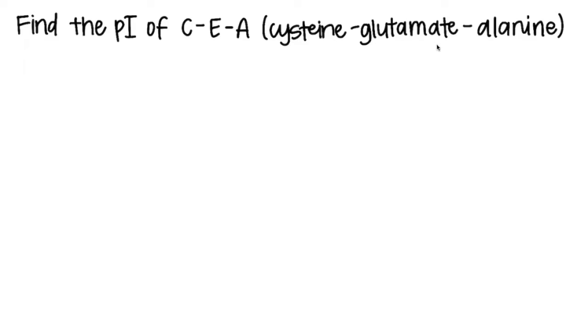Hi everyone, I'm Gina, and this video is going to go over how to calculate the pI of a tripeptide. The tripeptide that we're looking at today involves cysteine, glutamate, and alanine, and the CEA refers to the one-letter abbreviations of the amino acid.